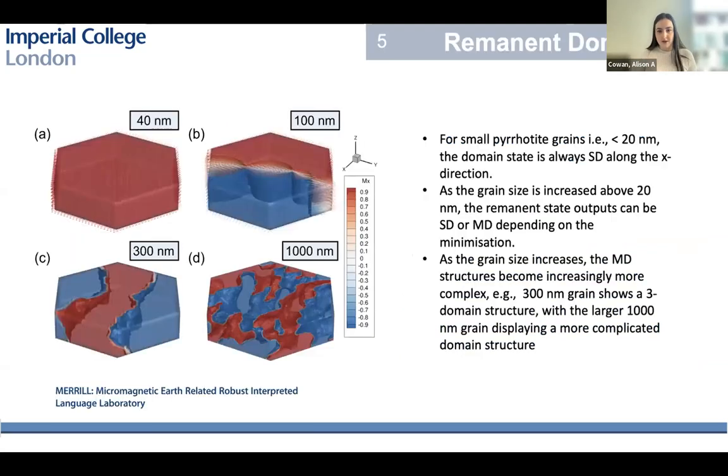In the next few slides, we're going to look at remnant state domain characterization. We're going to look at the nudged elastic band modeling for relaxation times and recording stability. And lastly, we're going to look at the simulated magnetic hysteresis and FORC diagrams. So first up, the remnant domain state. We've looked at sizes in the range of 10 nanometers to one micron, and this is from a randomized starting state.